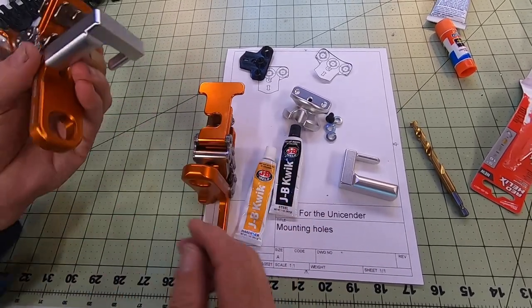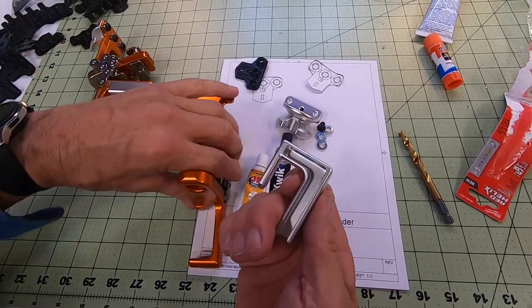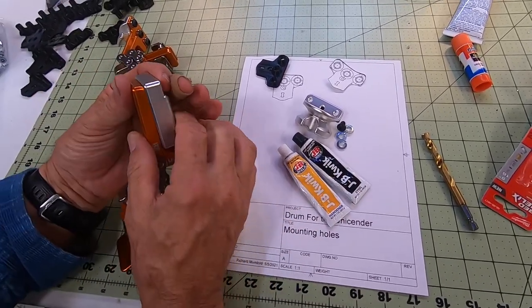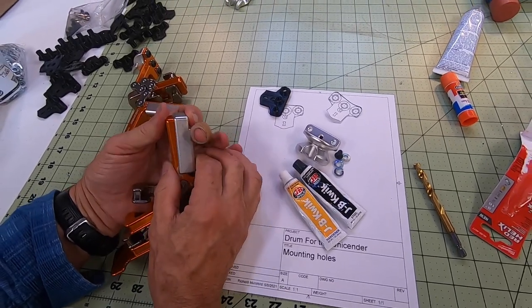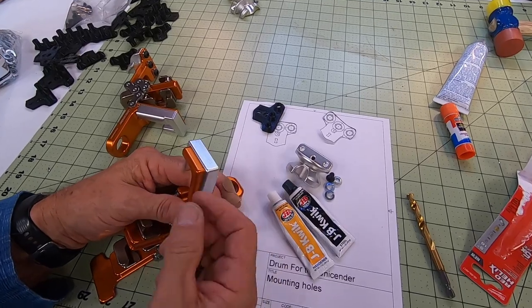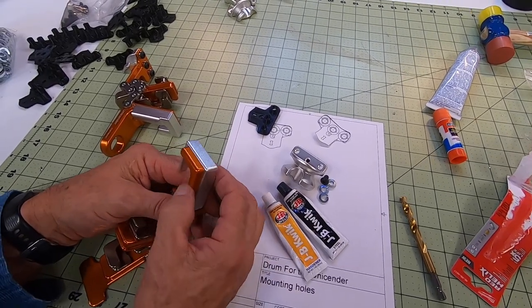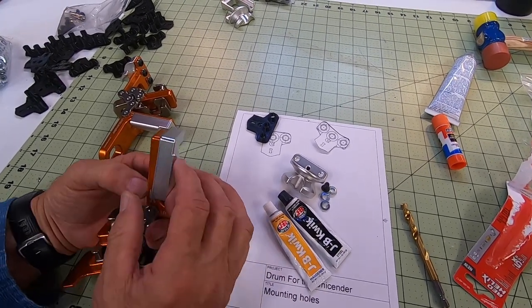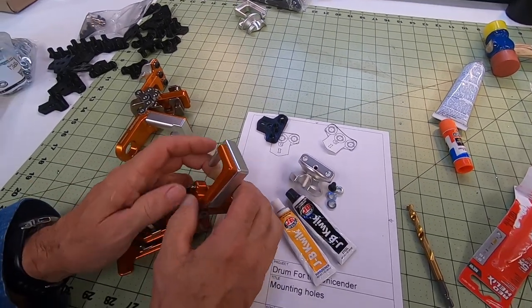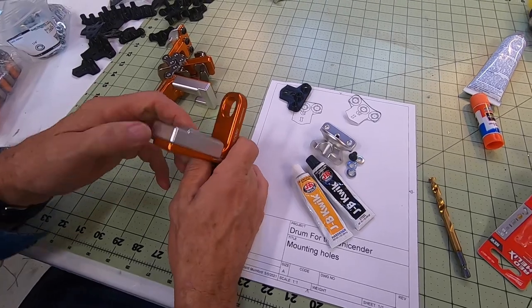When it comes to this L bracket, what I do, again this is a really snug fit. You can see right now that I can start to push this on. What I do, you can put it in a vice with some maybe soft clamps so you don't scar up the aluminum, and then just push that on.